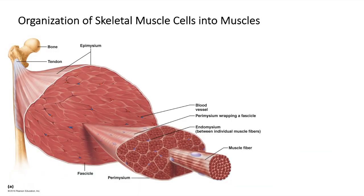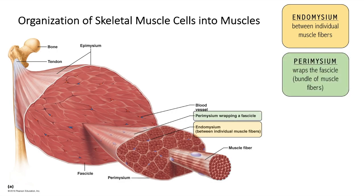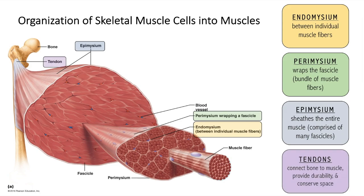Thousands of muscle fibers are bundled together with connective tissue to form the organs we refer to as skeletal muscles. Each muscle fiber is enclosed in a delicate areolar connective tissue sheath called the endomysium. Several sheathed muscle fibers are wrapped by a membrane called the perimysium, forming a bundle of muscle fibers called a fascicle. A large number of fascicles are bound together by a much coarser overcoat of dense irregular connective tissue called the epimysium, which wraps the entire muscle. The endomysium, perimysium, and epimysium all converge to form strong cord-like tendons connecting muscle to bone.